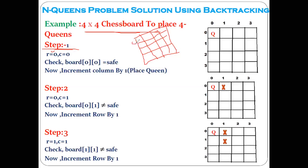We have the four-by-four chessboard, so we have rows 0, 1, 2, 3 and columns 0, 1, 2, 3. Initially, row is initialized to 0 and column is initialized to 0. Now initially, you have to check whether you can place the queen on 0th row and 0th column.